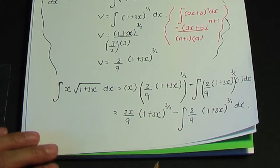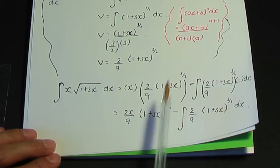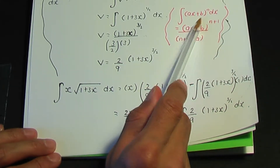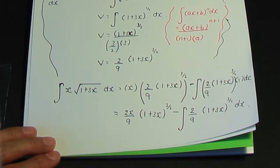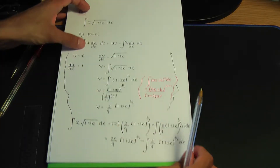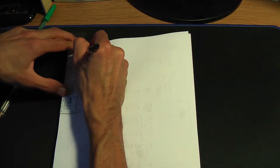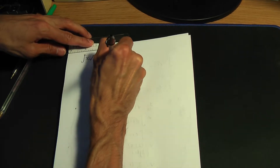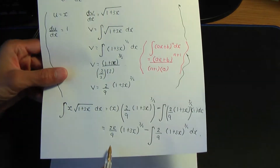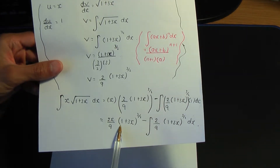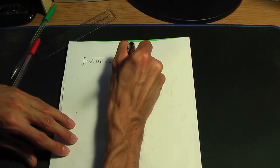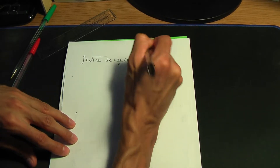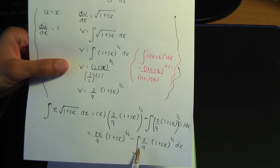To integrate the remaining term, remember our function is again of the form (ax plus b) to the power of n, so we can apply the same approach again. Continuing on the reverse: x into the root of 1 plus 3x with respect to x equals 2x/9 times (1 plus 3x)^(3/2).